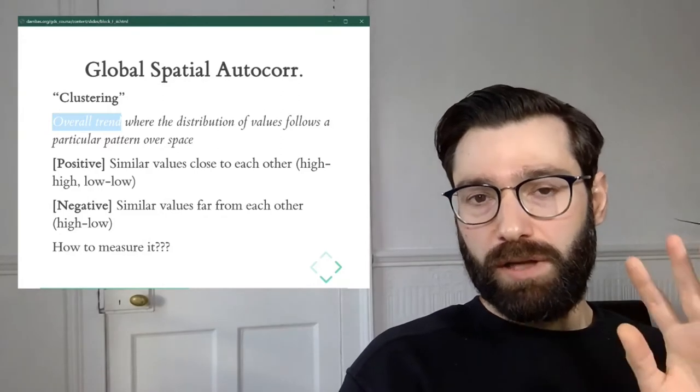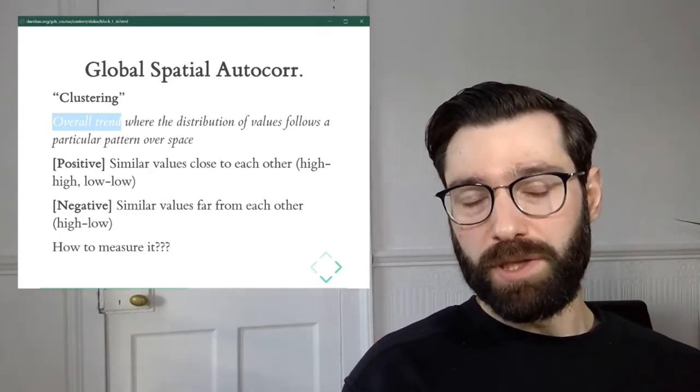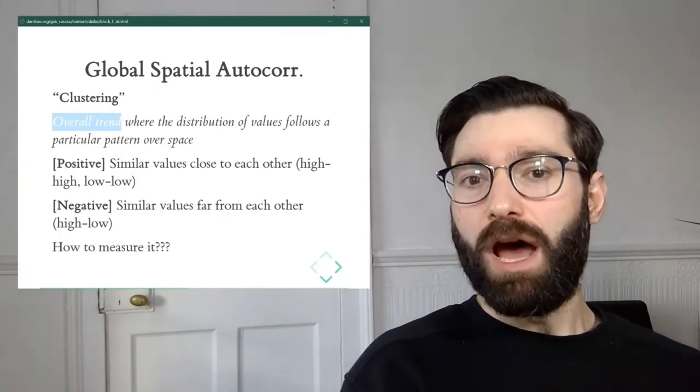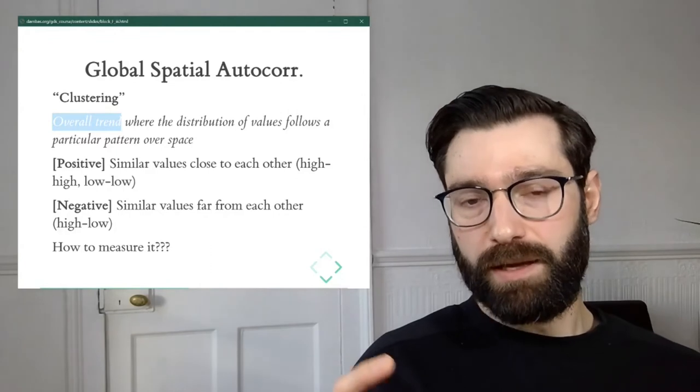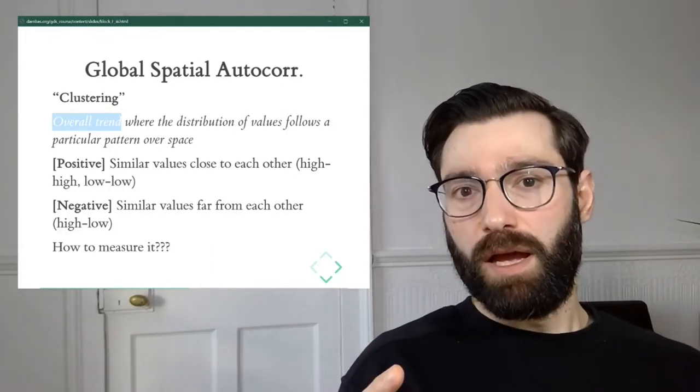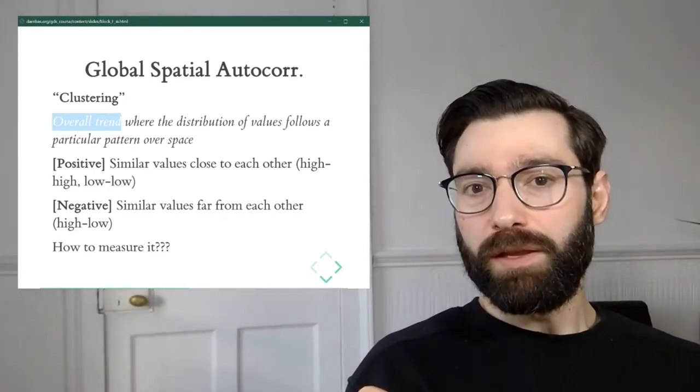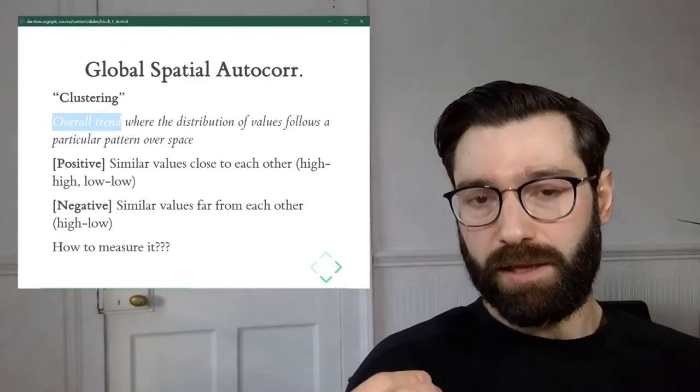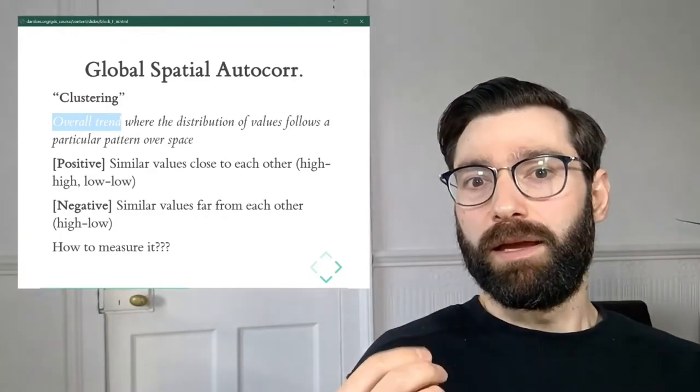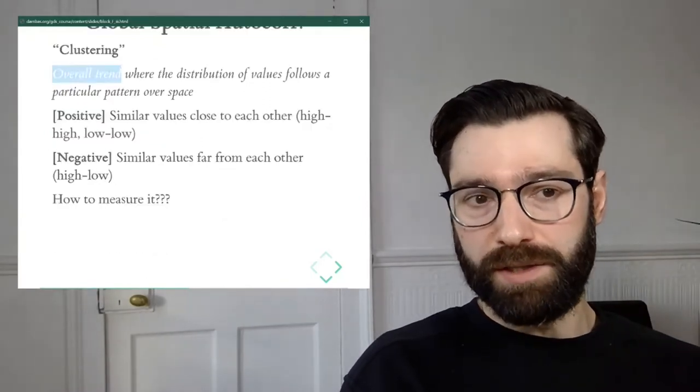These are all ideas that hopefully will help you understand the concept of Global Spatial Autocorrelation. Now let's see how we can operationalize this notion into a statistical tool that we can use to explore whether a dataset is displaying some form of Global Spatial Autocorrelation.